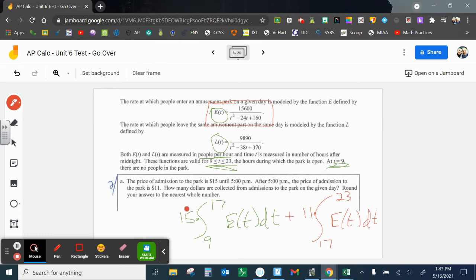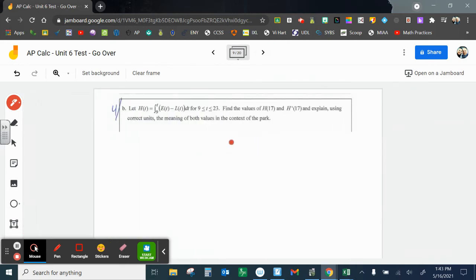And then this is the people that enter from 5 p.m. to 11 p.m., but I multiply by 11 because the ticket costs change. And we should get $104,048. So just make sure you can do that on your calculator and get that to work. If not, we'll have to go over that.